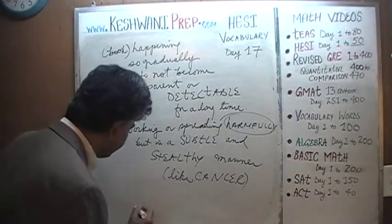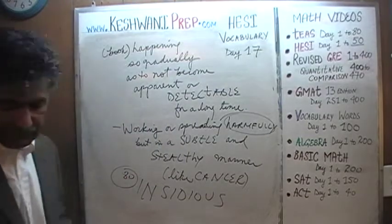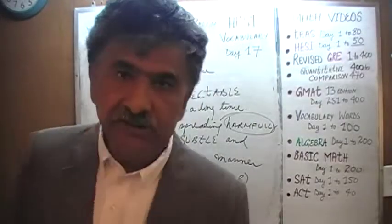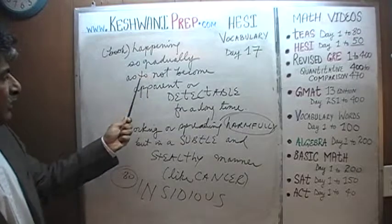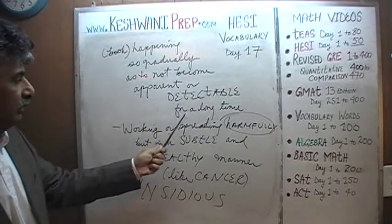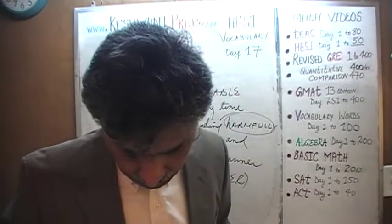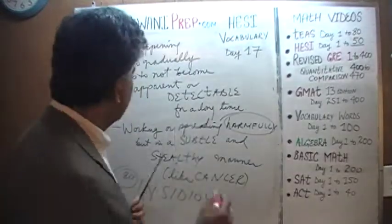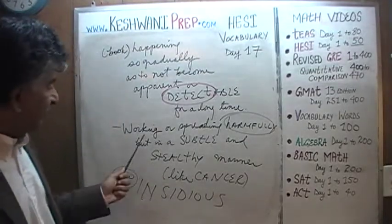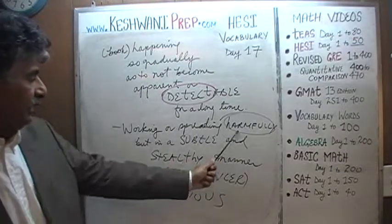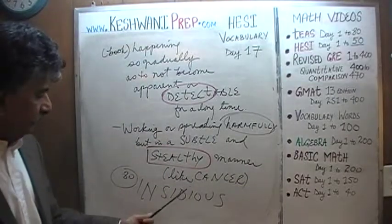The last word we did yesterday was insidious. We learned that insidious means something that happens gradually — something that is happening so gradually as to not become apparent or detectable for a long time. So gradual and subtle that it spreads in a subtle way that it is not detectable for a long time. You can also describe something insidious as working or spreading harmfully in a subtle and stealthy manner — like cancer.